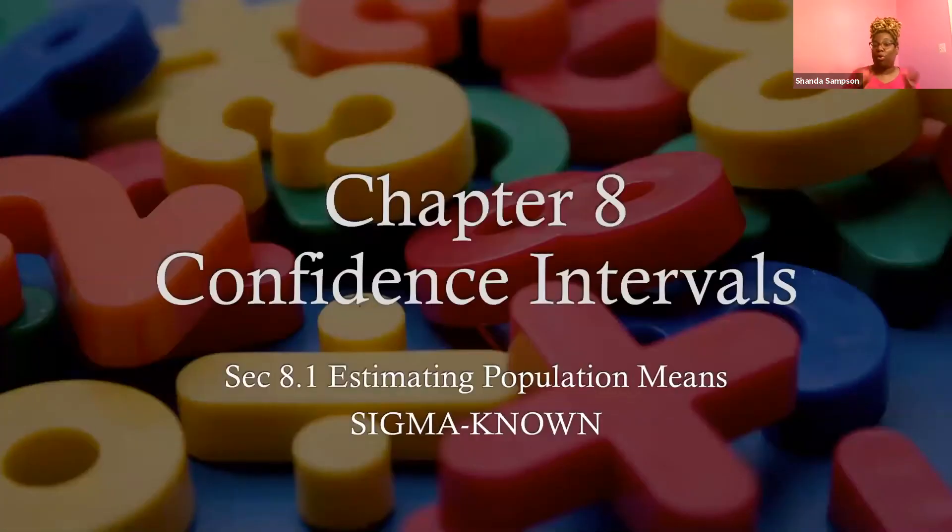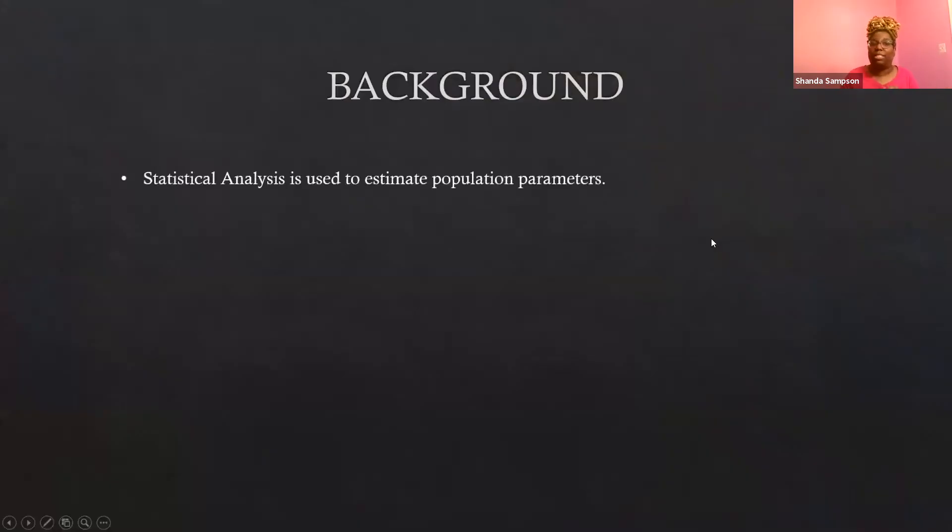So let's get right into these definitions. What we'll be going through today is what I would call chapter eight, but if you're in another book with another class, this is just confidence intervals. Now confidence intervals is the beginning of some fun stuff with statistics. So we're gonna start with section 8.1, but just so you know, it's estimate population means when sigma is known. Here's some background information just to get us started.